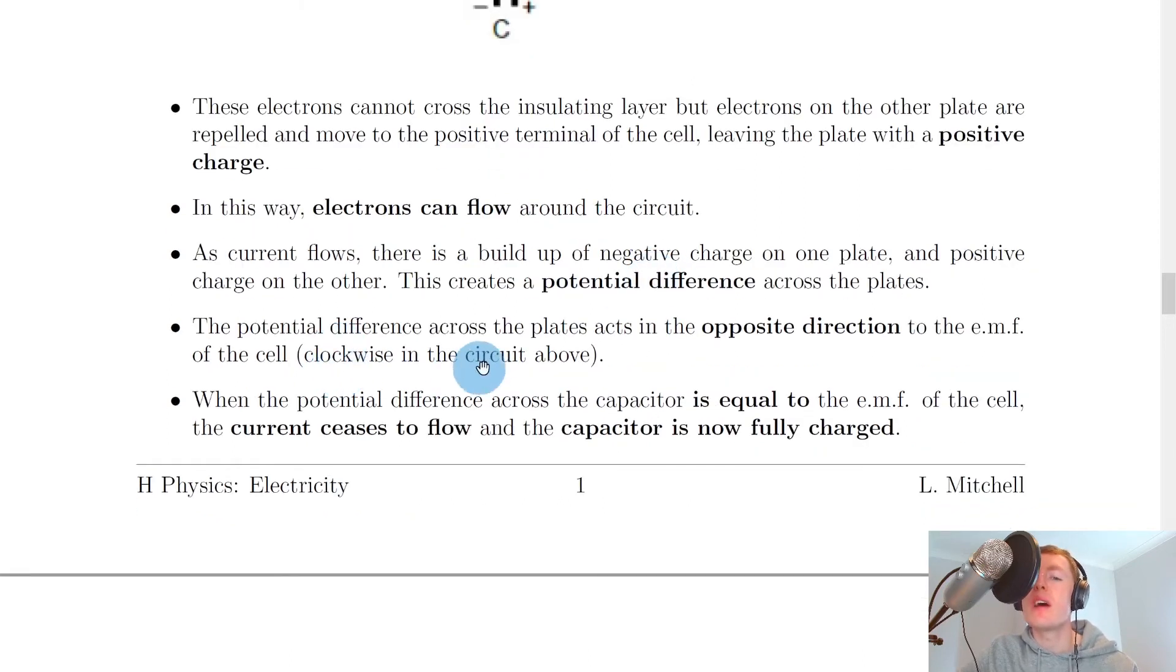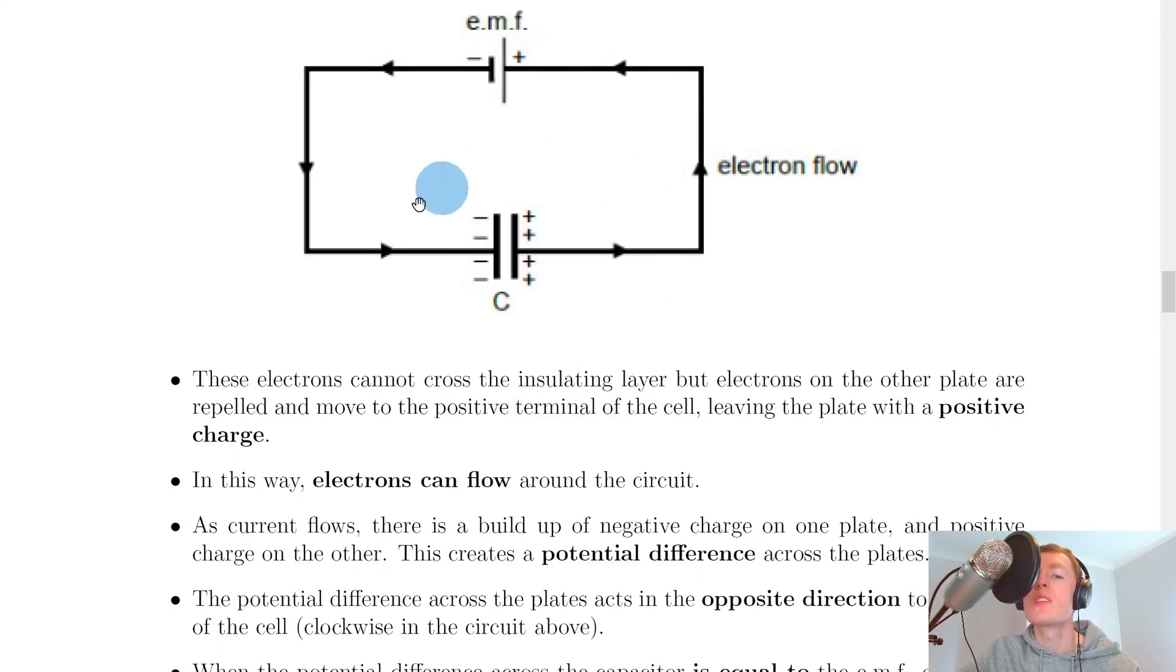The potential difference across the plates acts in the opposite direction to the EMF of the cell, i.e. clockwise in the circuit above. So the electric field direction is going to the left in this case, from positive to negative, and that is actually against the direction of the EMF, which comes anti-clockwise here.